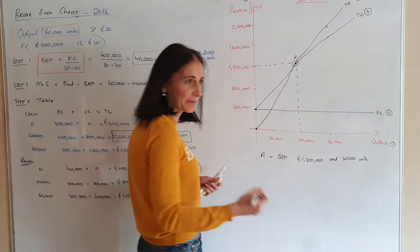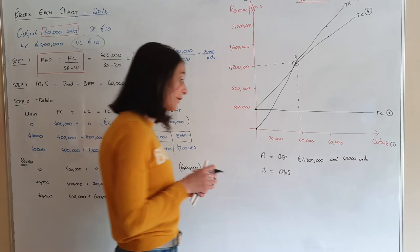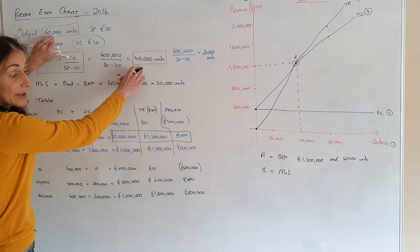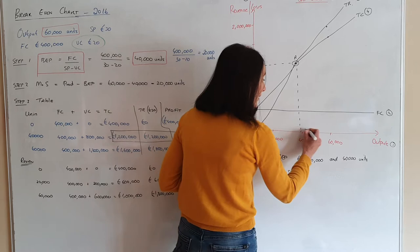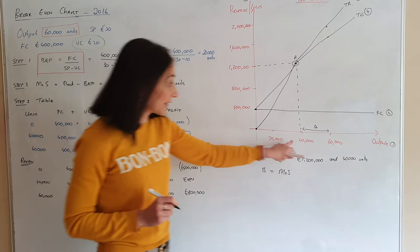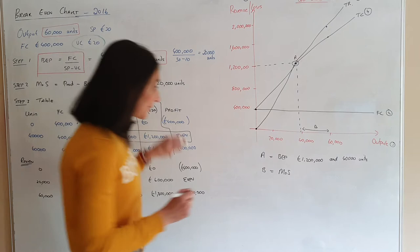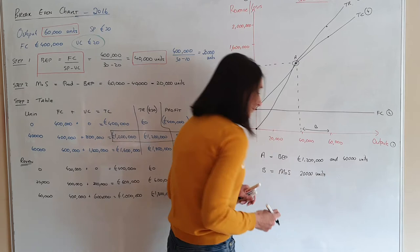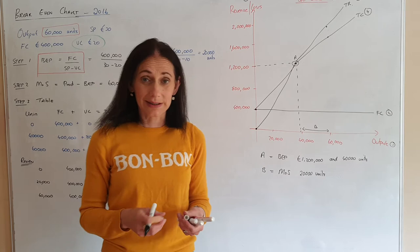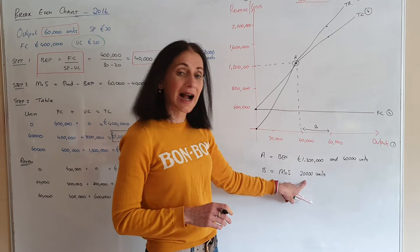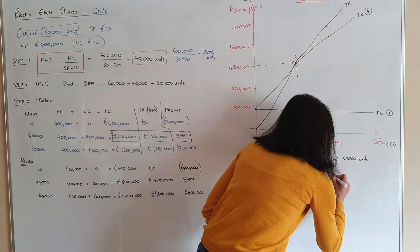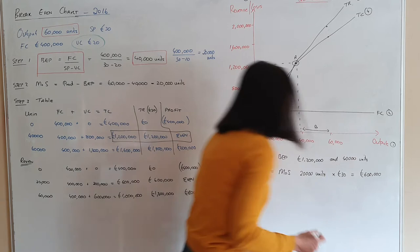For part B, I'm going to show the margin of safety. Remember what margin of safety is: it's where you're producing minus your break-even point in units. You're producing at 60,000 and your break-even point is at 40,000, so from here to here is Point B — that's your margin of safety of 20,000 units. Just in case they ask in the exam, they could also ask for margin of safety in revenue: you multiply by the selling price of £30 and you'd get £600,000.